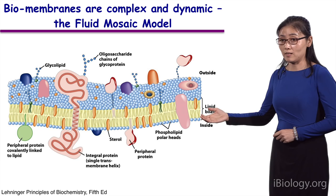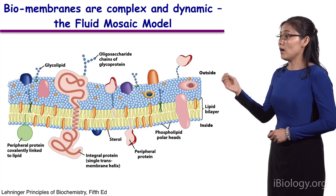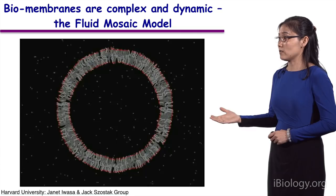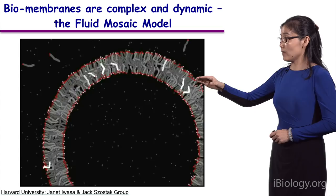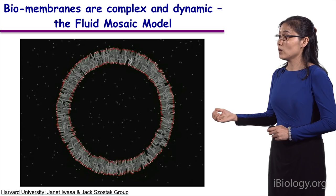We all know that biomembrane is not only just a lipid bilayer — there are embedded proteins, which are also generally modified by polysaccharides. However, even in the absence of the proteins, the lipid bilayer itself is complex and dynamic. It is known that there are more than 1,000 lipid species within a cell. Therefore, a lipid bilayer may have distinct composition, and they are highly dynamic. The lipids can freely diffuse laterally, and they can undergo flip and flop, and they can go in and out of the lipid bilayer.